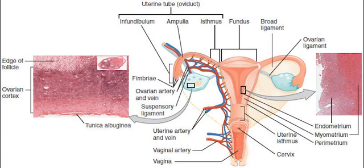The upper end, the body of the uterus, is connected to the fallopian tubes at the uterine horns, and the rounded part above the openings to the fallopian tubes is the fundus. The connection of the uterine cavity with a fallopian tube is called the uterotubal junction.